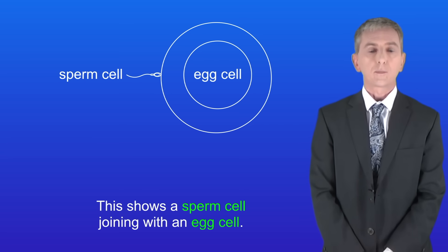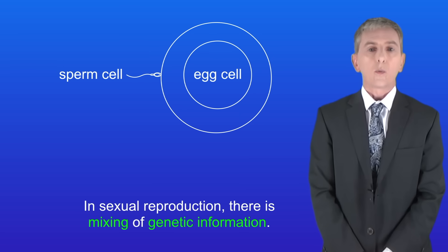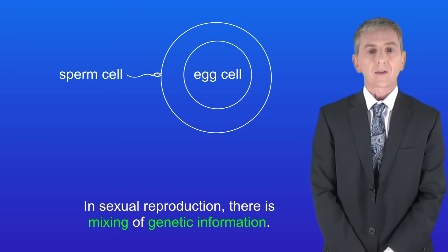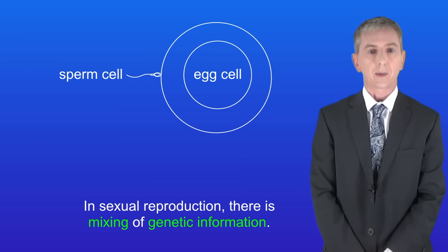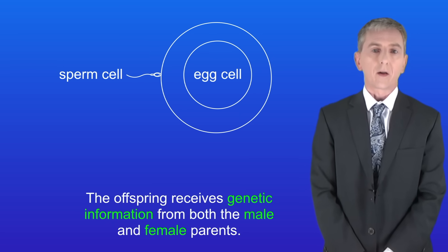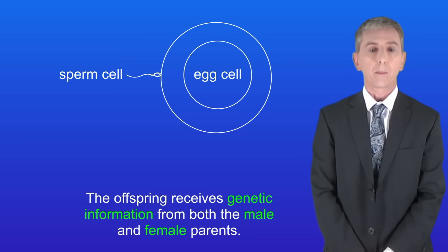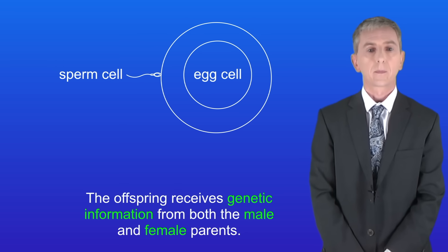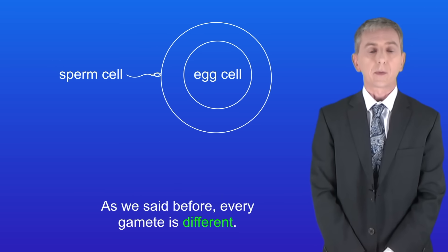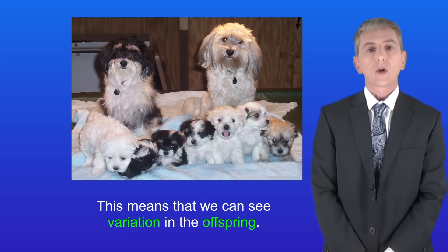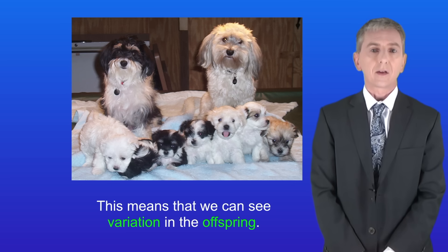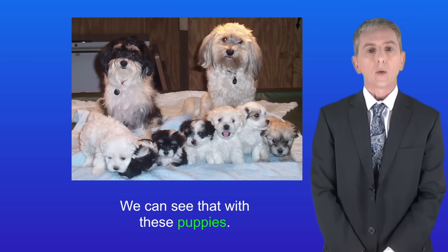This shows a sperm cell joining with an egg cell. In sexual reproduction there is mixing of genetic information — the offspring receives genetic information from both the male and female parents. Because every gamete is different, we can see variation in the offspring, and we can see that with these puppies.